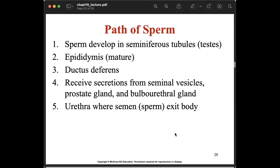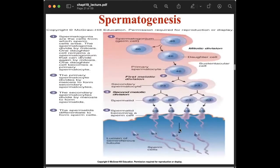The path of sperm: sperm develop in the seminiferous tubules of the testis, then move to the epididymis where they mature, then through the ductus deferens where they receive secretions from the seminal vesicle, prostate gland, and bulbourethral gland, and finally exit the body through the urethra.